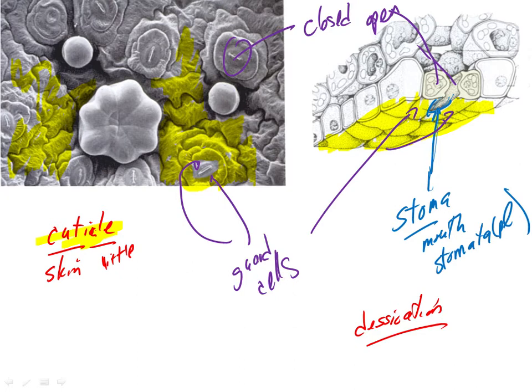But the point I am making is that guard cells will swell or become less turgid, collapse, and that will open and close the stomata. And so it lets the plant then regulate water loss through it. So really, they are, it's a very interesting kind of situation.